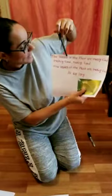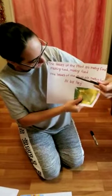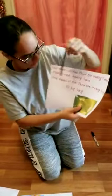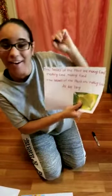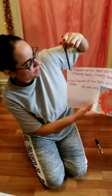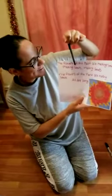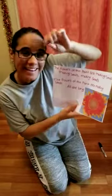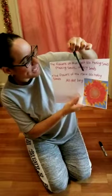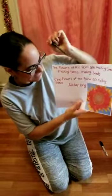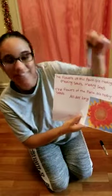The leaves of a plant are making food, making food, making food. The leaves of a plant are making food all day long. The flowers of a plant are making seeds, making seeds, making seeds. The flowers of the plant are making seeds all day long.